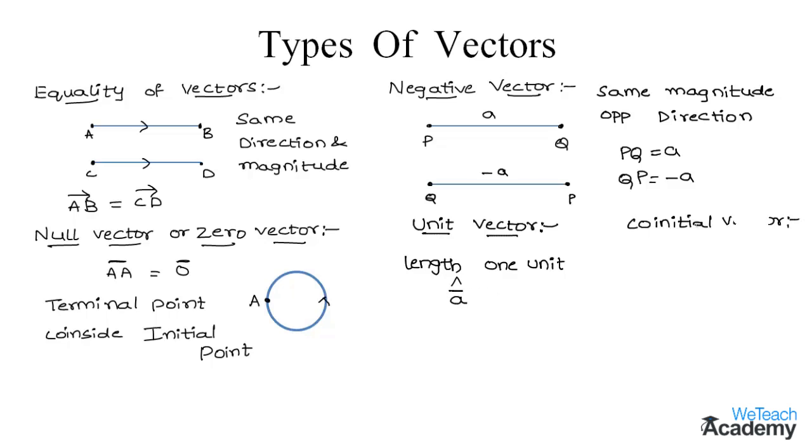And the next one is co-initial vector. So to explain this, let us consider three line segments. And we observe that these three line segments intersect at one point. So let us name this as A.